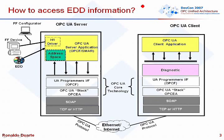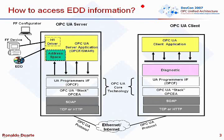This is the big picture. We have an OPC UA server that is able to access this information and expose some nodes, some objects, and all the device descriptions that are embedded inside the device descriptions.